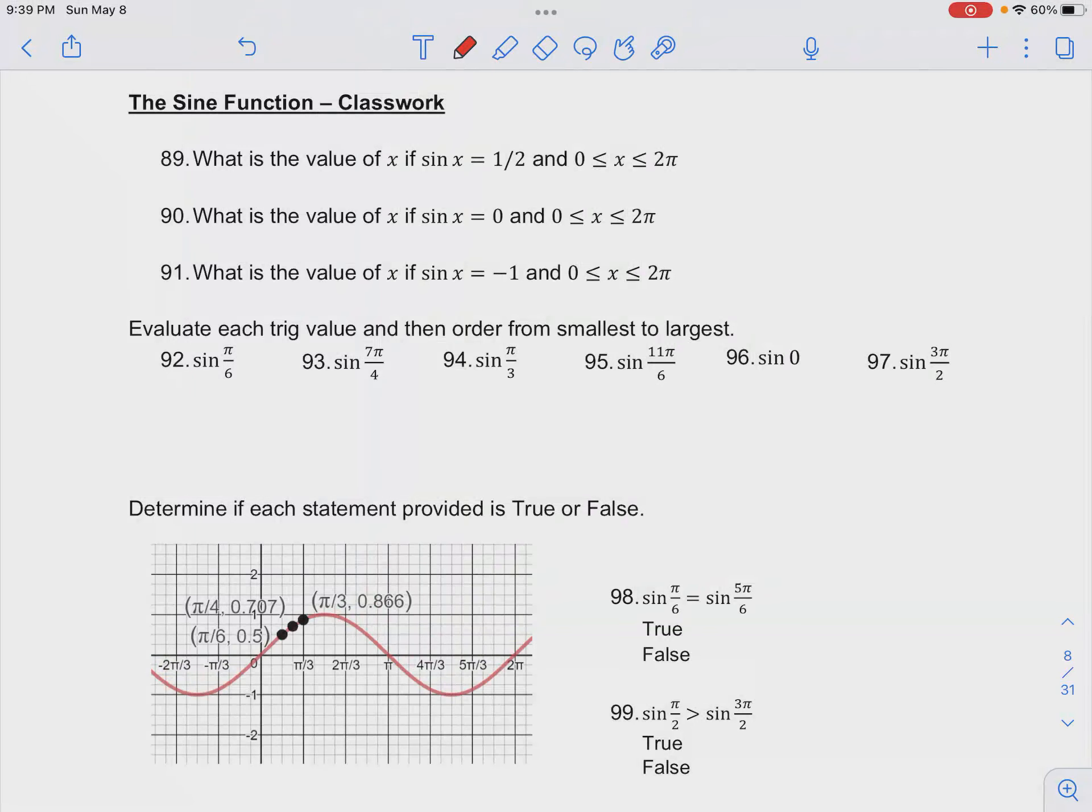In number 93 in your classwork for the sine function, we want to evaluate the trig value and then order from smallest to largest. So we have sine of 7π over 4, and 7π over 4 is a special angle.